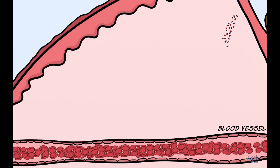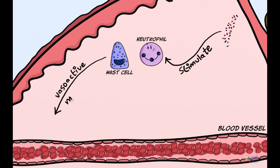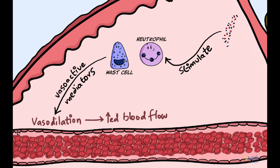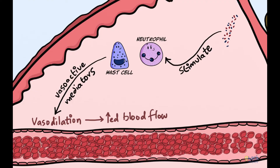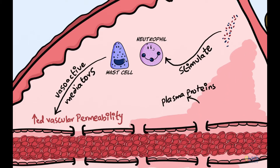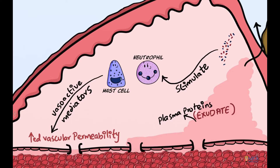Bacteria and their toxins, after entering the connective tissue, stimulate or activate cells like mast cells or neutrophils to produce vasoactive mediators of inflammation that cause vasodilation of the capillaries and increase blood flow. Along with vasodilation, mediators of inflammation also increase vascular permeability, which leads to escape of plasma fluids containing proteins. This is called an exudate, and it is this exudate that escapes out via the sulcus as the gingival crevicular fluid.